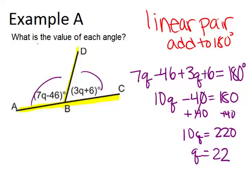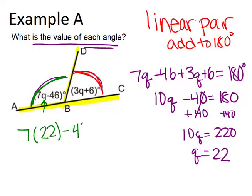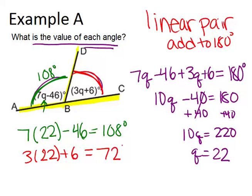Now the original question says, what is the value of each angle? So we're trying to figure out how many degrees is this angle, and also how many degrees is this angle. So if we want to do the green angle, we have to plug in 22 for Q in the expression for the green angle. So compute 7 times 22 minus 46, and you get 108 degrees. For the other angle, again, you want to use 22 and plug it in for Q in the expression 3Q plus 6, and you end up with 72 degrees.